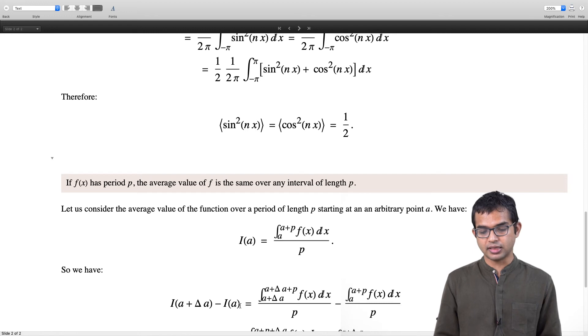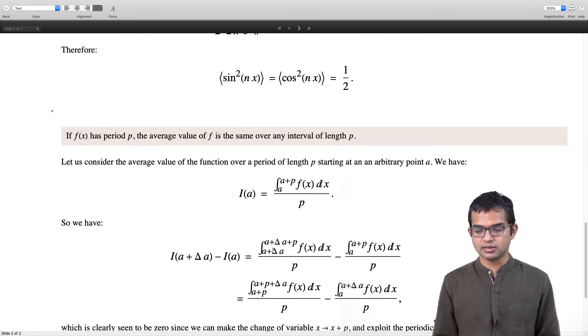I(a + Δa) - I(a) is—in place of a I have to put a + Δa. So I have a + Δa here, I have a + Δa + p, f(x)dx minus this original integral. Then I notice that there is this interval which is common to both of these integrals, and that is basically it runs from a + Δa all the way up to a + p. There is a leftover bit which is from a + p to a + p + Δa, so that I have to keep, and then I have to also subtract this other part which is also left out.